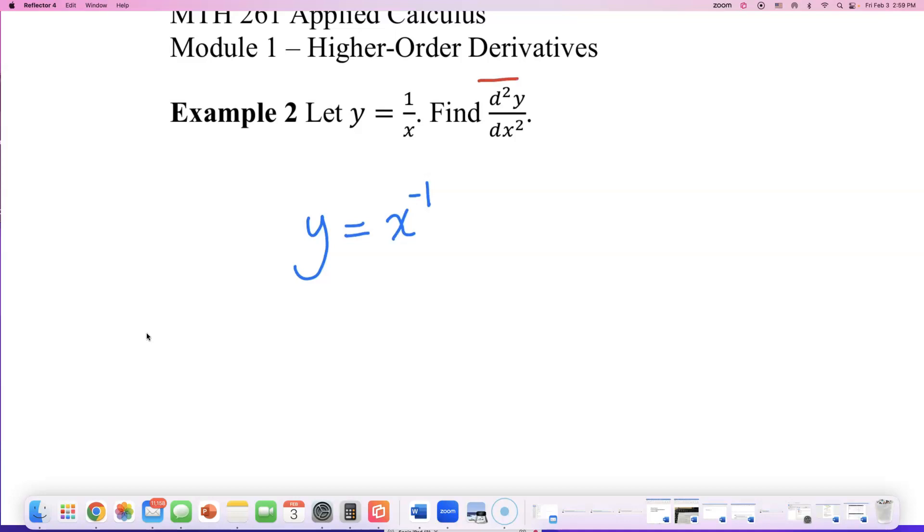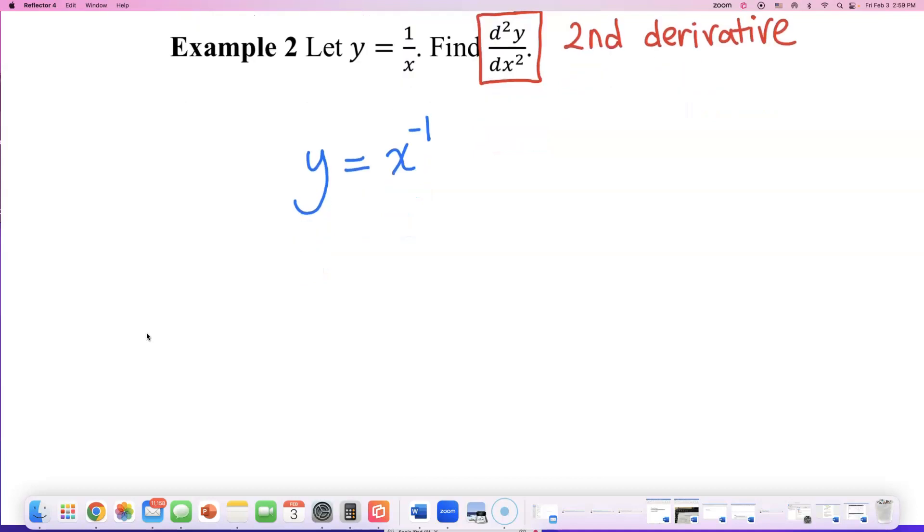Let's read this. What do they want? They want the second derivative. So take the derivative twice. That's what we're doing.